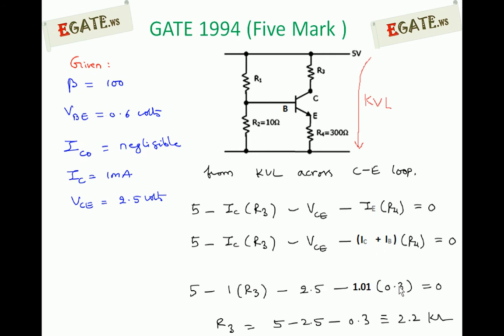1.01 into 0.3 is nothing but 0.303. We are approximating it as 0.3. So that R3 value will be equal to 5 minus 2.5 minus 0.3 which is 2.2 kilo ohms.